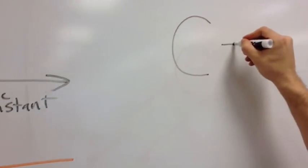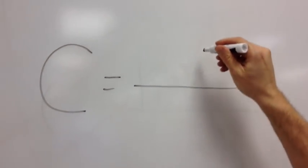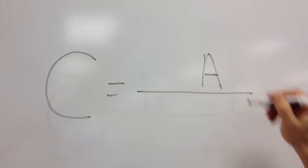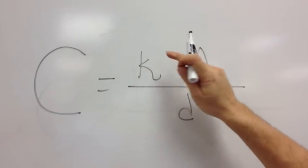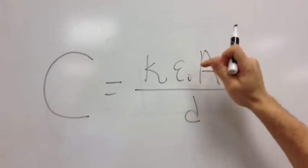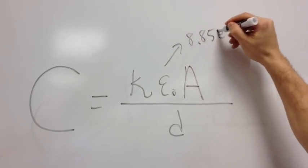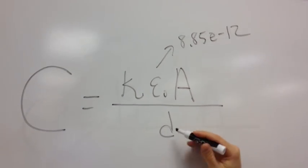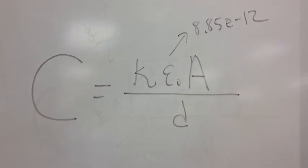The capacitance is determined by the factory when they make it. So it depends on the area of the plates, the distance between the plates, the dielectric constant, which goes by the letter K, and the constant, which will never change, which is 8.85 e to the negative 12th. Distance is on the bottom because that was inverse. The other factors were linear, so they're up top.